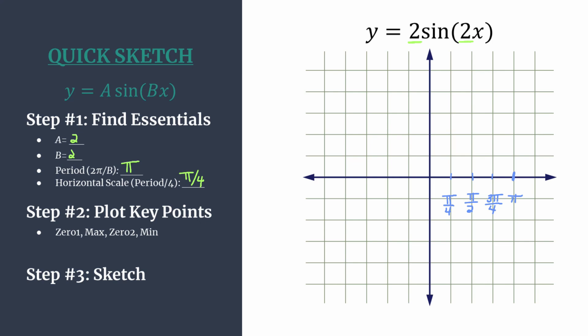For your vertical scale, look at your value of a. Usually 1 works really well here. This will show that distance from the midline, which is just our x-axis in this case, up to a maximum or down to a minimum. So we'll label up to 2 and down to negative 2.